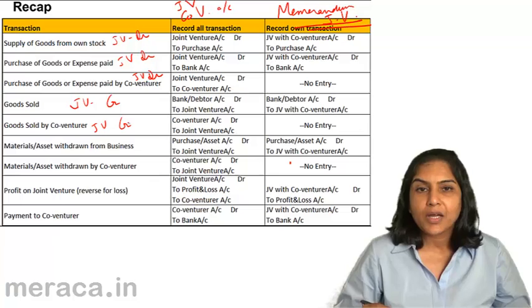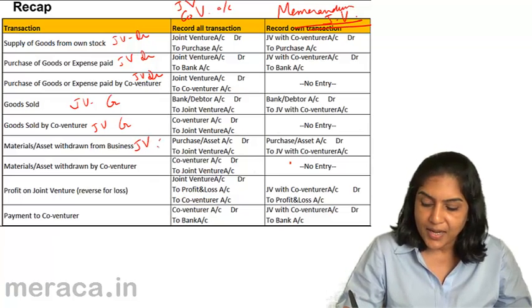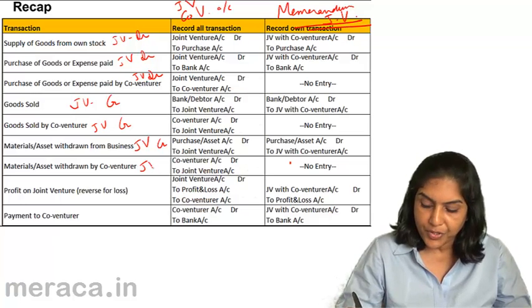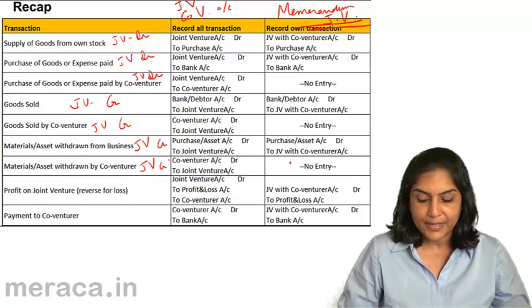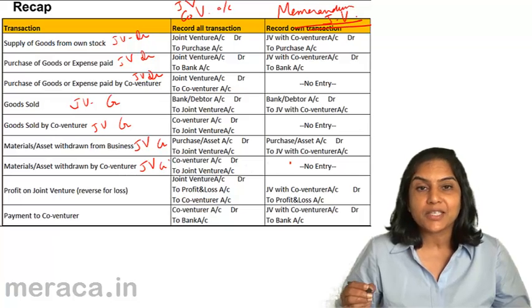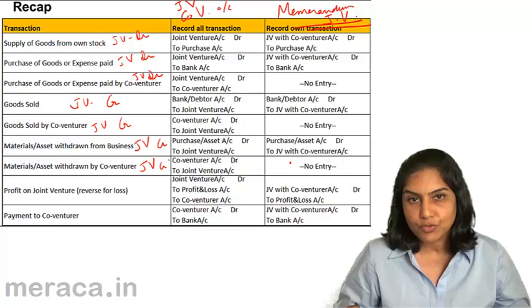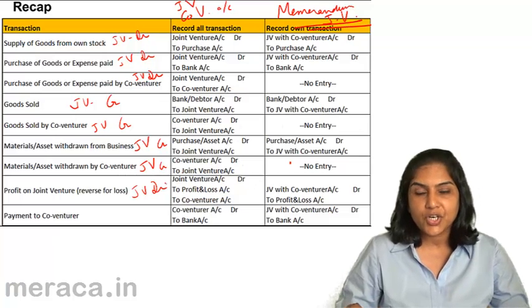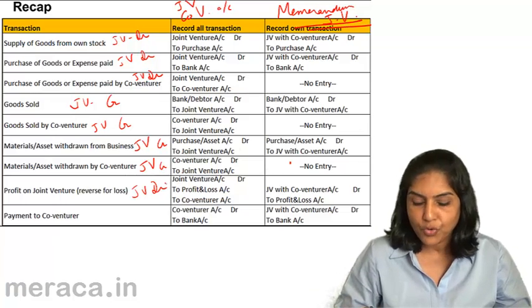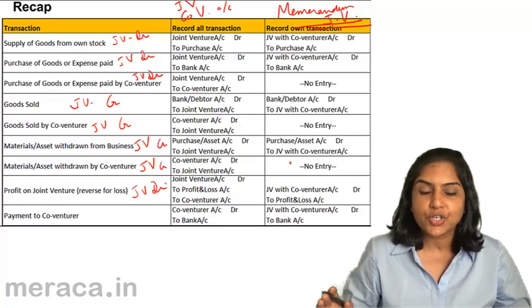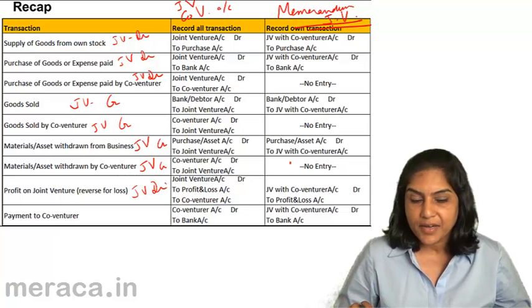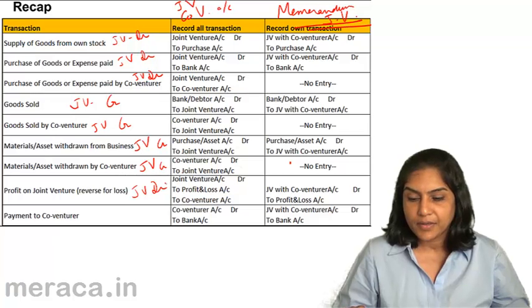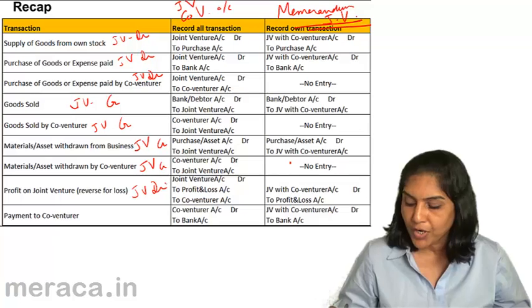If goods are sold by the co-venturer also, since it's a sale, joint venture would be credited. If materials or assets are withdrawn from the business, it is treated similar to a sale — it is income and it is credited to joint venture, whether withdrawn by Aakash or Bikash. If there is a profit on joint venture, the credit balance is more, so we close the account by debiting the joint venture account. Payment to co-venturer does not involve the joint venture — it involves co-venturer and bank accounts.